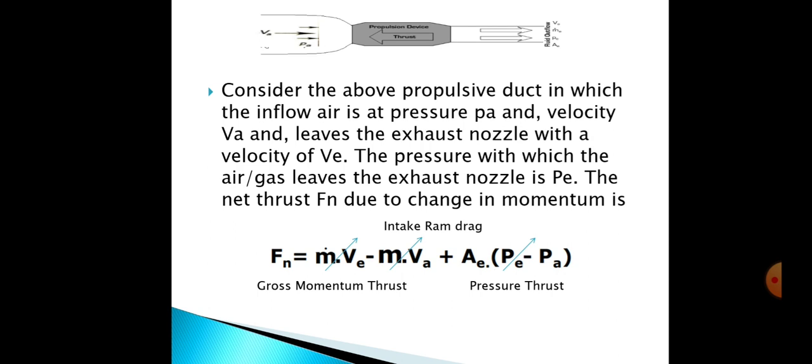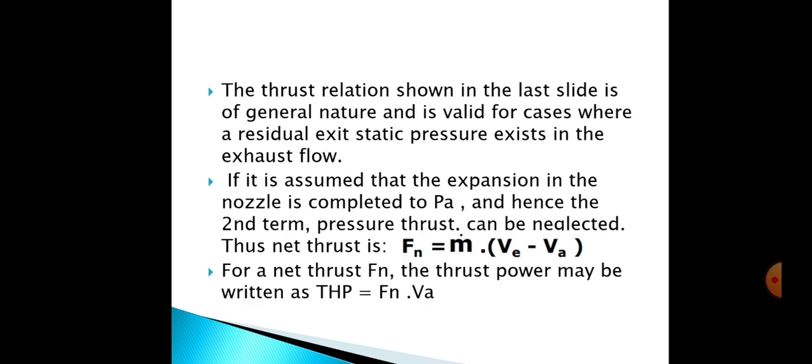Where ṁVe is gross momentum thrust, ṁVa is intake ram drag, and Ae(Pe - Pa) is pressure thrust. The thrust relation shown in the last slide is of general nature and is valid for cases where a residual exit static pressure exists in the exhaust flow. If it assumes that the expansion in the nozzle is completed to Pa, hence the second term pressure thrust can be neglected. The thrust is written as Fn = ṁ(Ve - Va).